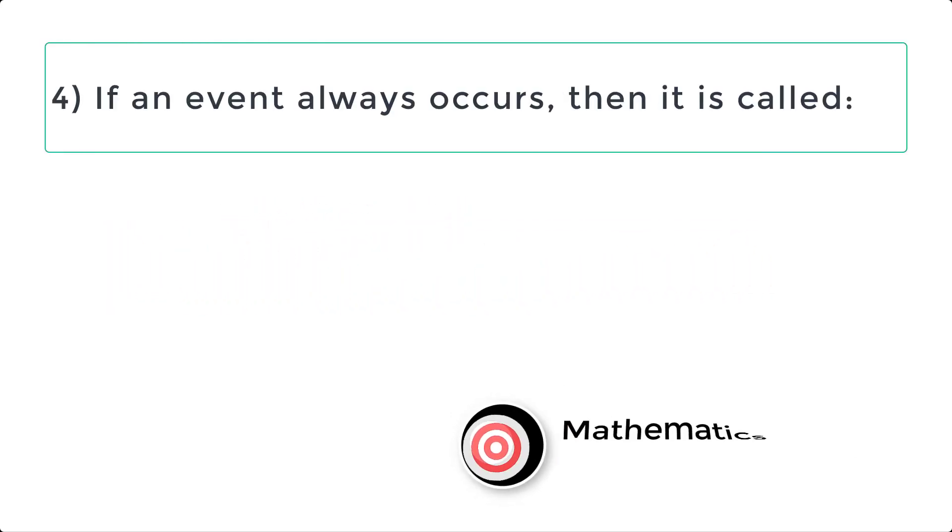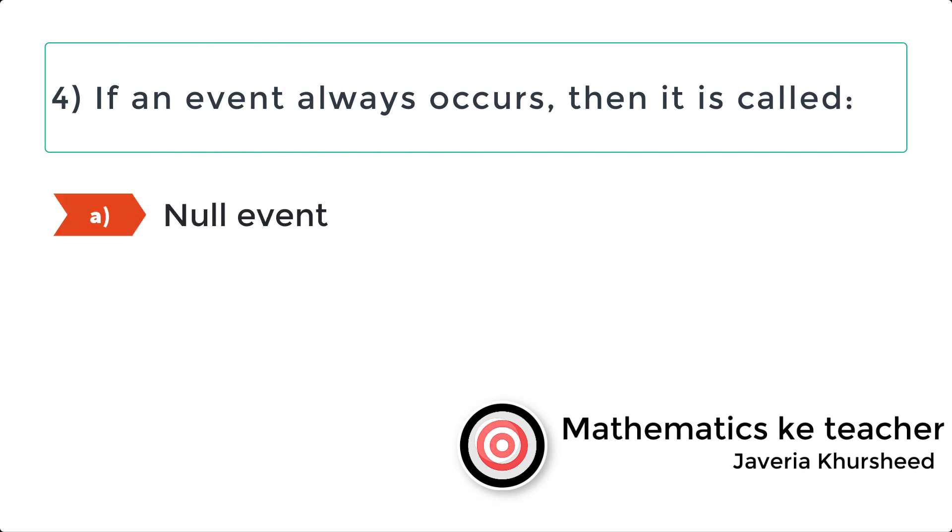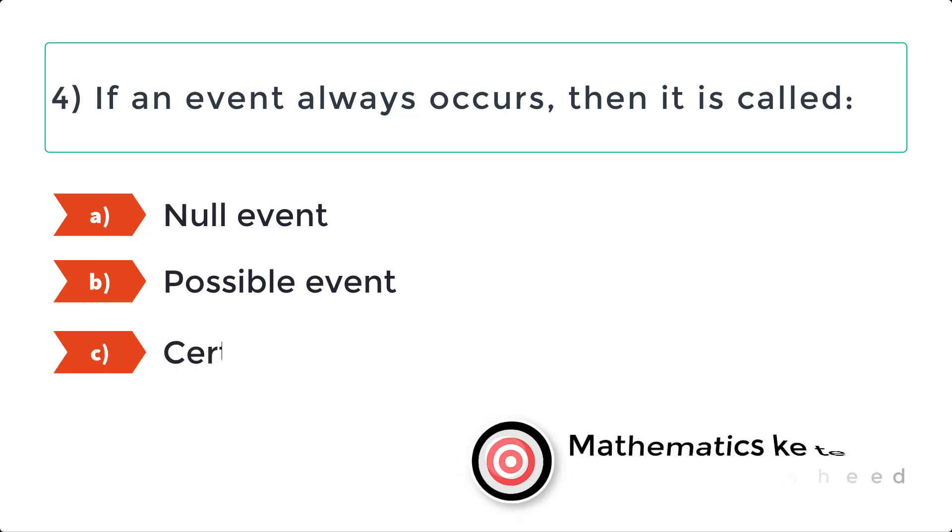Question 4: If an event always occurs, then it is called. A. Null event, B. Possible event, C. Certain event, D. Independent event.